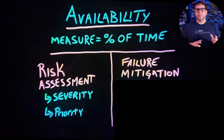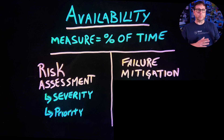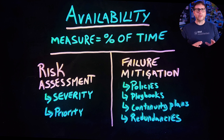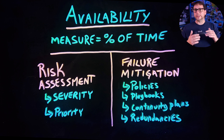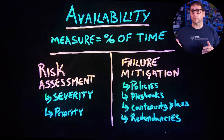Next we have failure mitigation, which involves determining how your maintenance and support teams will respond to issues when they do occur. Keep in mind, you're never going to be able to identify every potential issue that could happen that would make your system unavailable. But you can put together things like playbooks that have a general approach for how you're going to respond to issues and who needs to be involved. You can also put together continuity plans that cover how your business is going to continue to function if your system does go down. And depending on your industry, you might also want to build redundancies into your architecture so that you have backup systems that can take over if your main ones do fail.